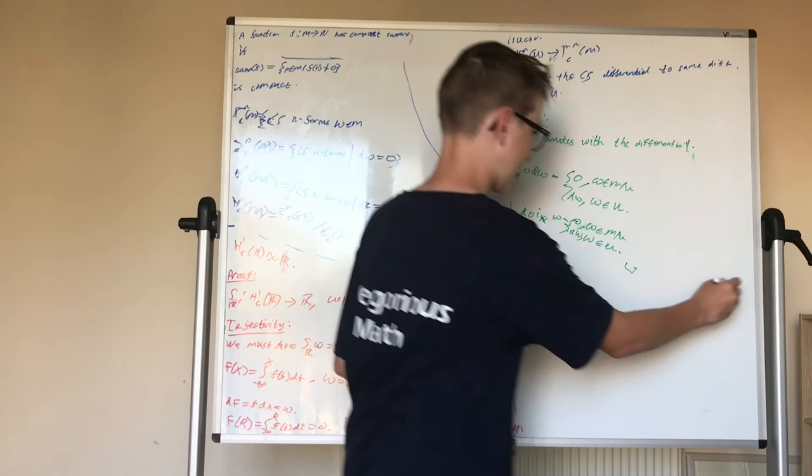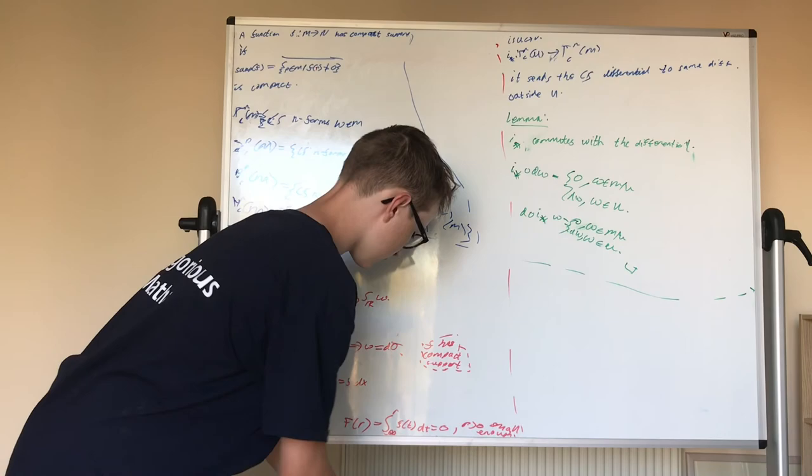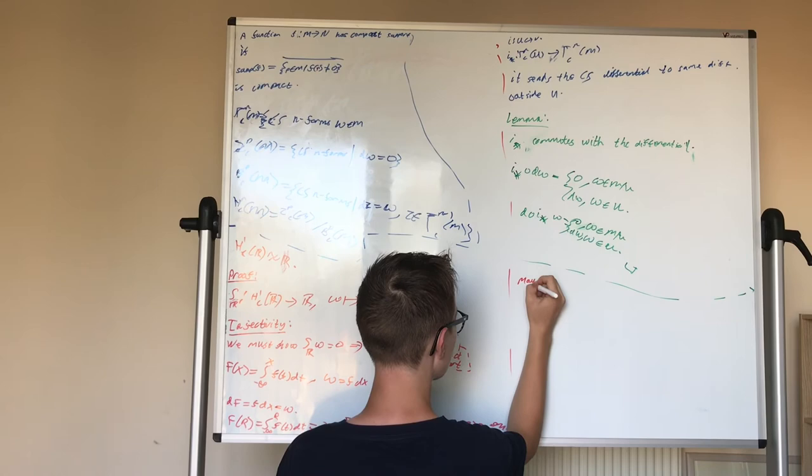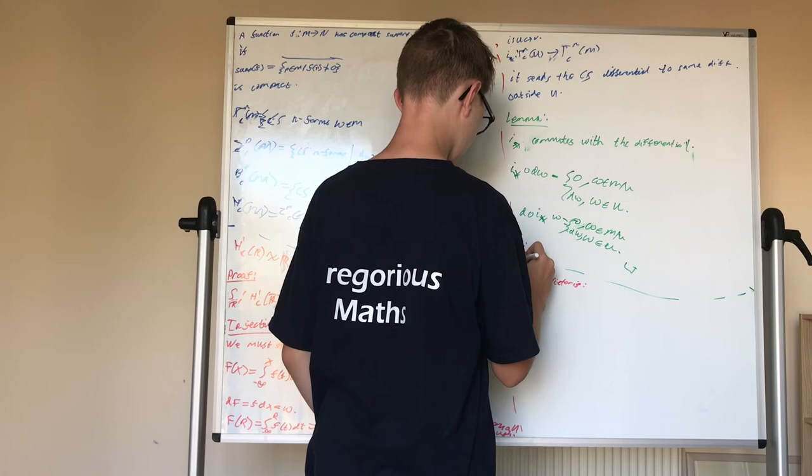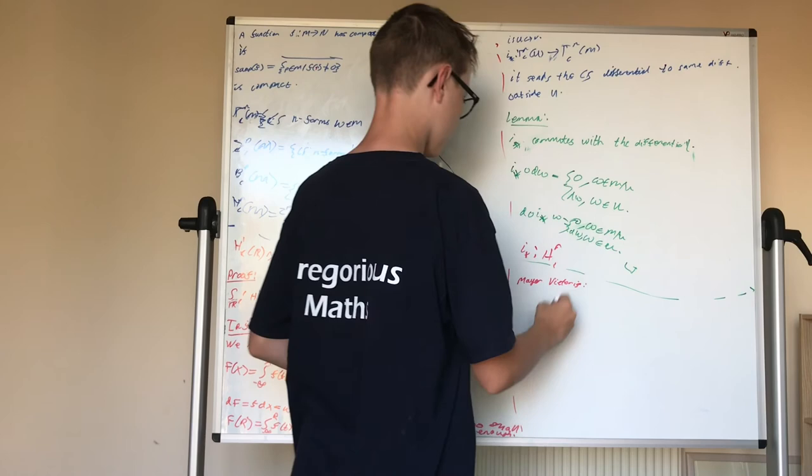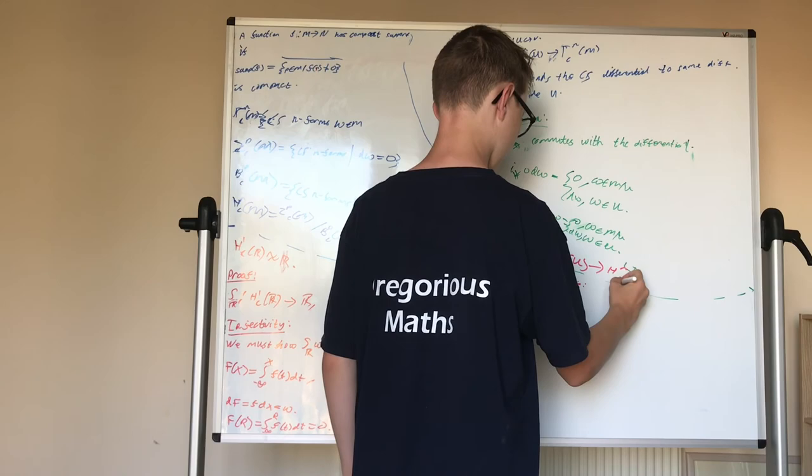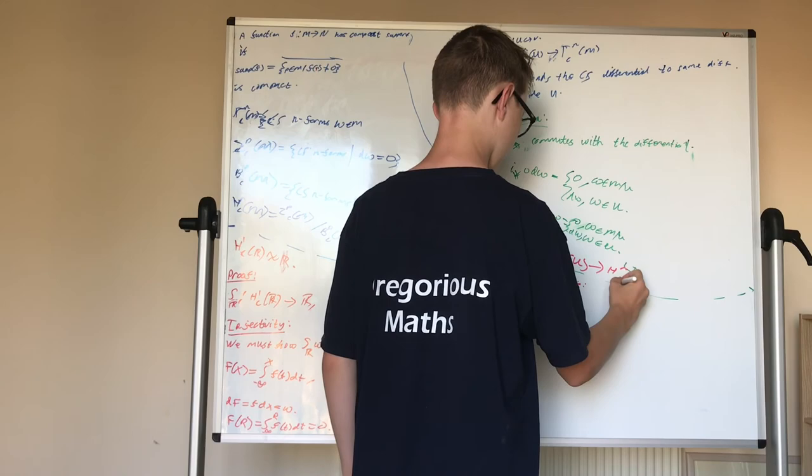Now, as you might expect as well, we have Mayer-Vietoris. And I forgot to mention that this induces a map, I star, which takes you from the nth de Rham cohomology group with compact supports of U to that of V. So this is another induced map.